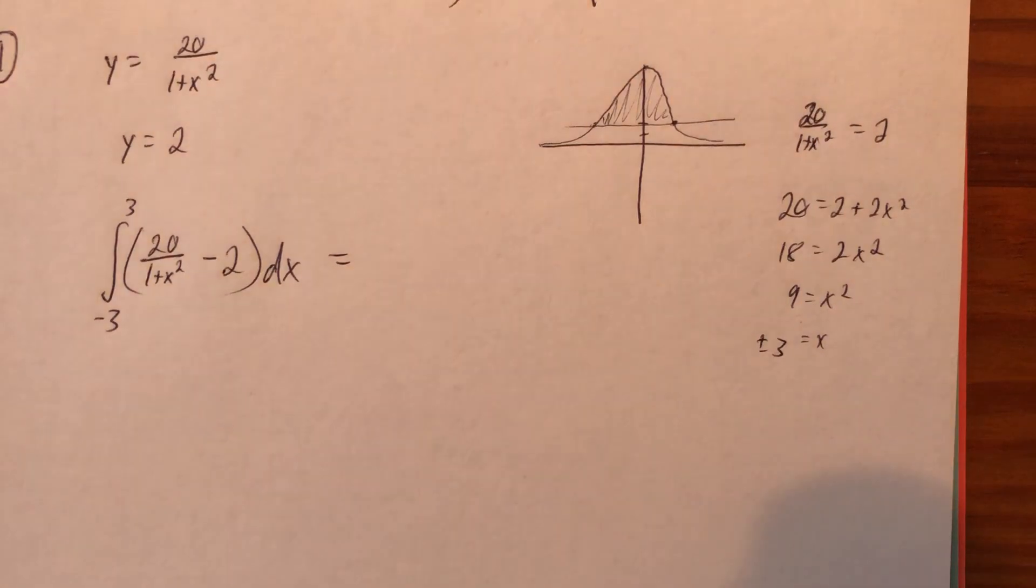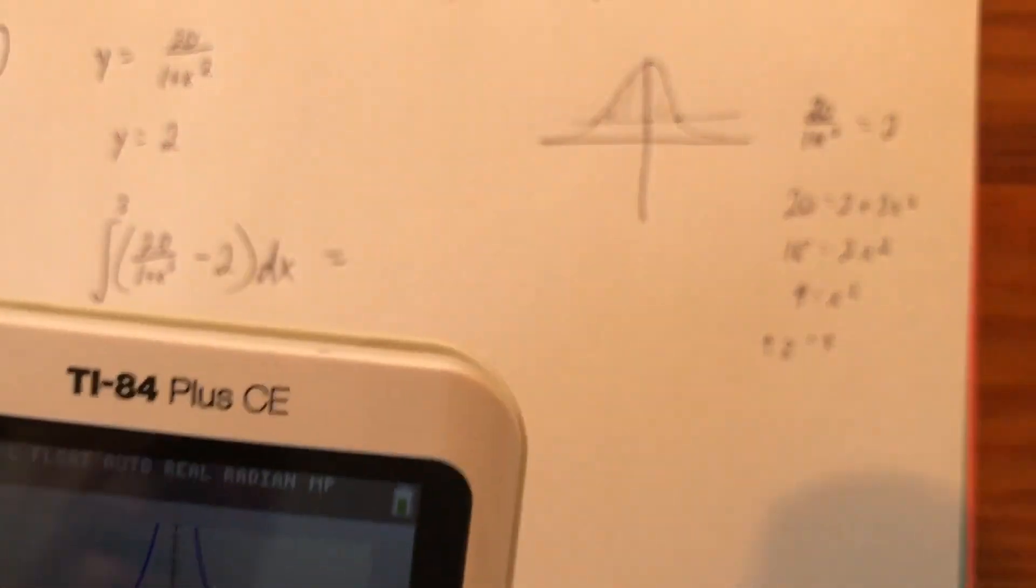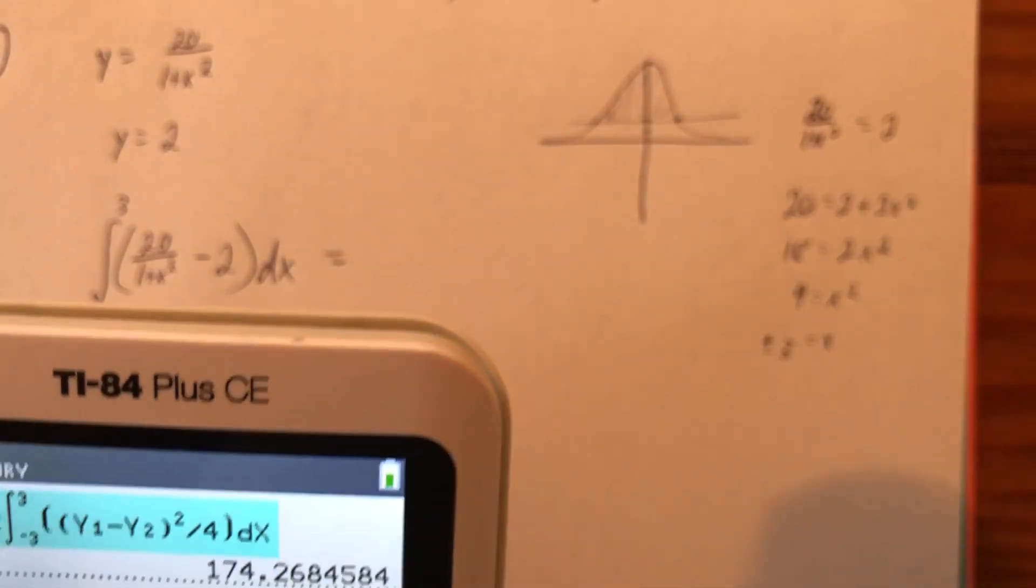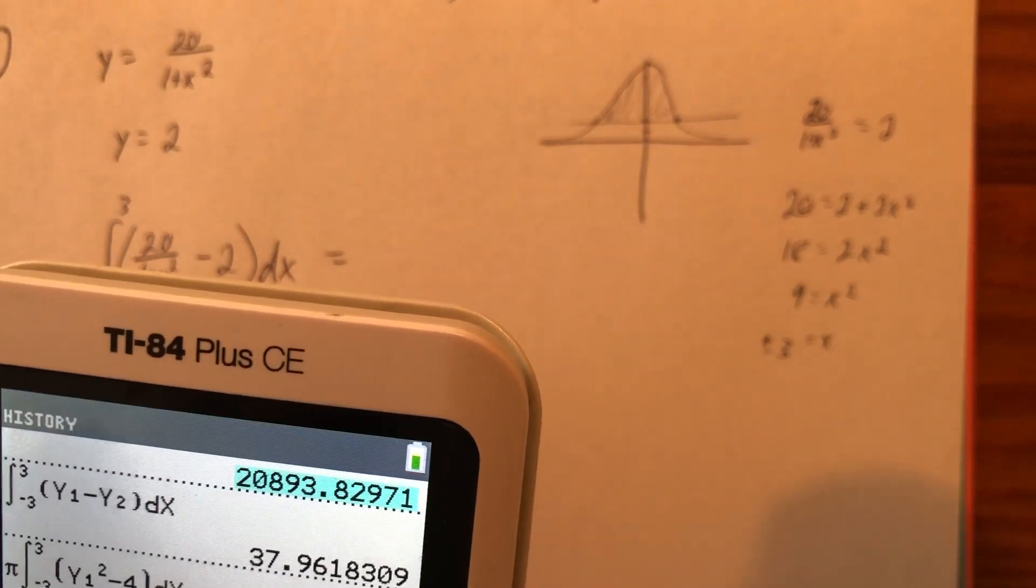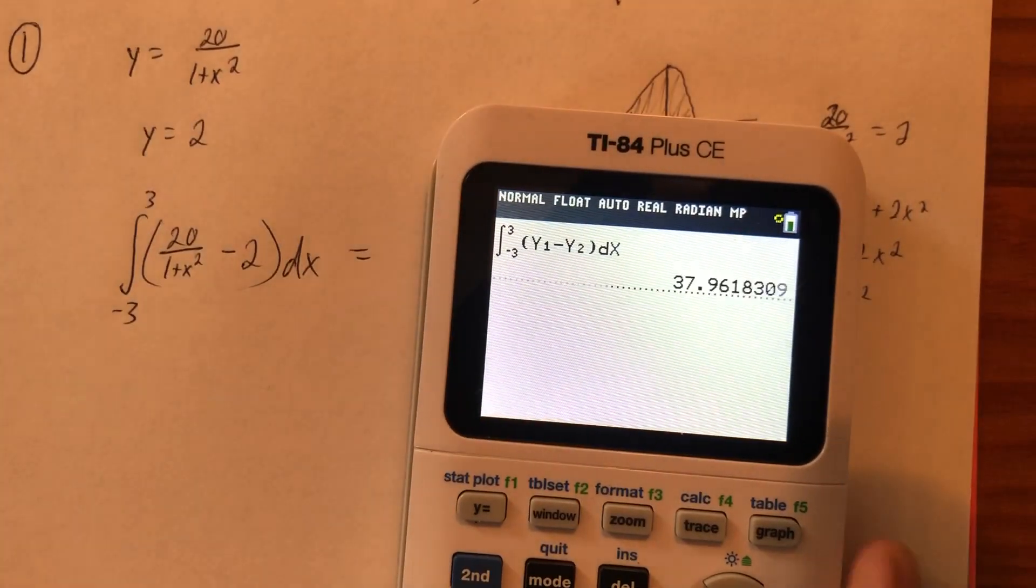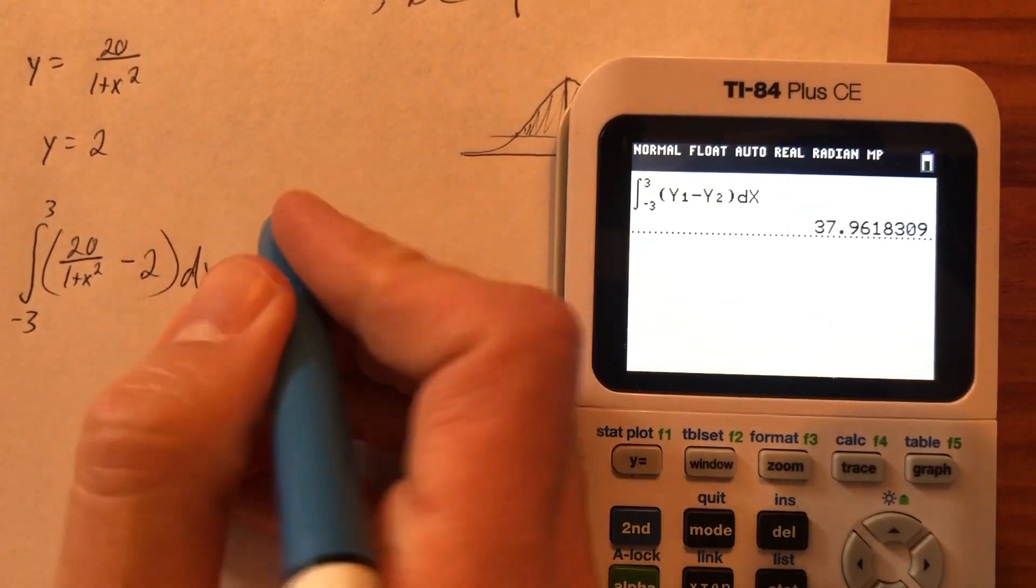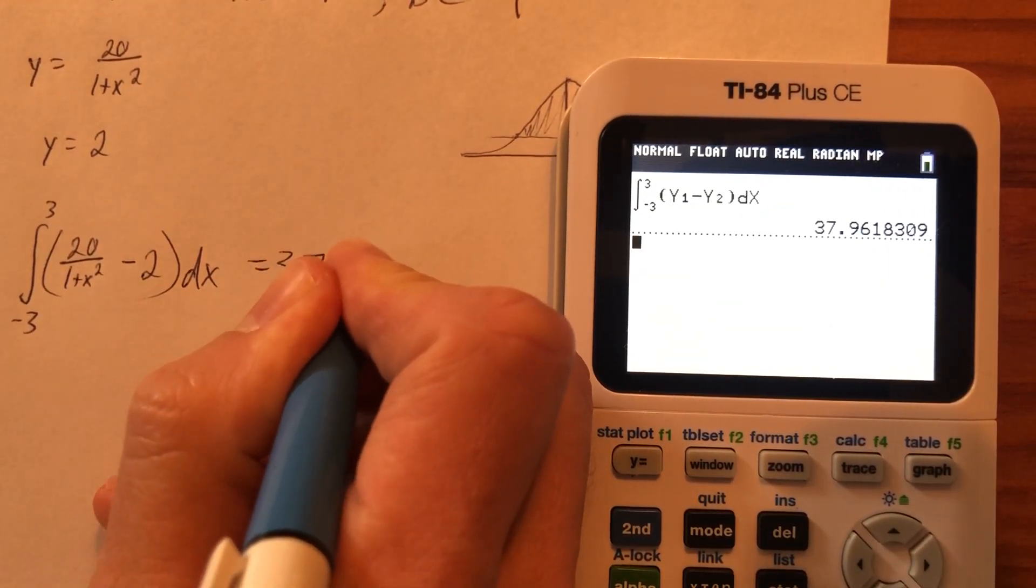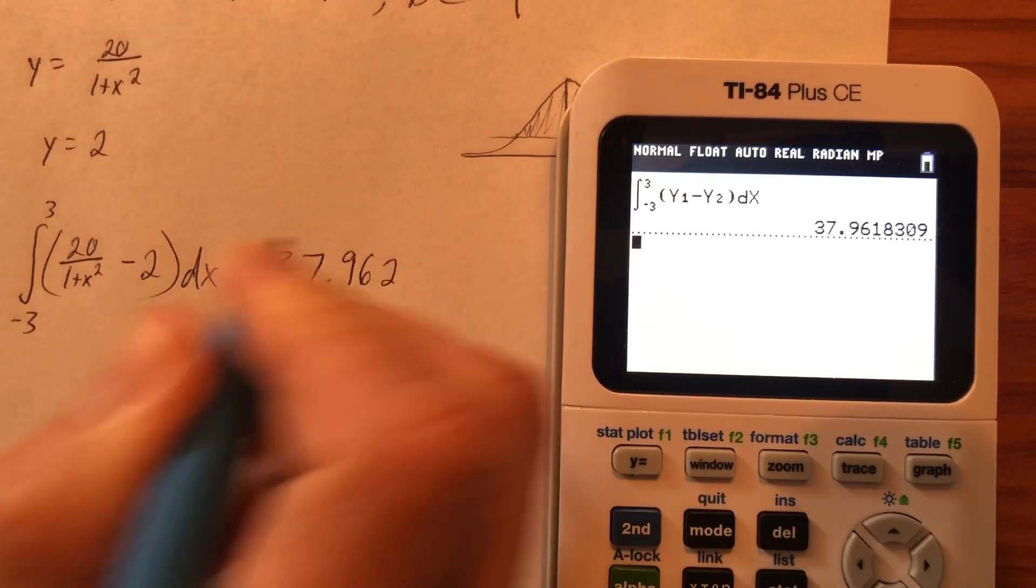So now that I've wasted your time doing something by hand that you knew how to do, I won't waste your time because I will scroll up to the actual answer. There we go. And this is what I've got. We'll round to three decimal places, of course. 37.962.